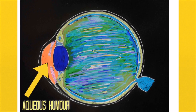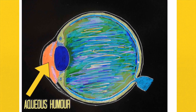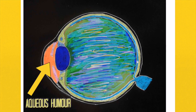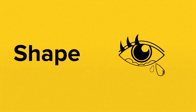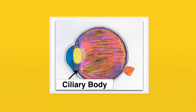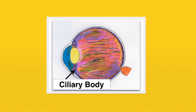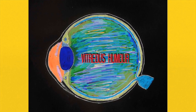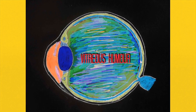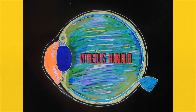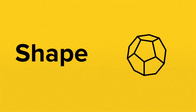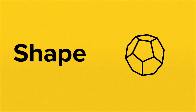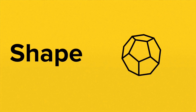The eye is filled with liquid. To the front of the lens it's called aqueous humour, which gives the front of the eye its shape and is produced and secreted by the ciliary body. The middle of the eye is filled with vitreous humour — this jelly-like substance is really important in maintaining the shape of the eye.